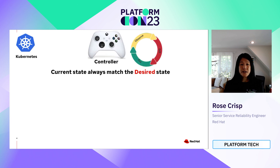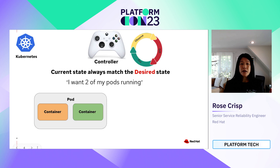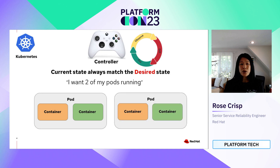One of the most impressive features is the controller system with its reconciliation loop that makes sure the cluster's current state matches the desired state by continuously watching resources for any changes. For example, if you want two pods running in your cluster but only one is available, the controller will automatically create a new pod. Kubernetes is open source and can run on various cloud platforms, making it accessible to organizations of all sizes, and with a large active community, it is continuously improving.